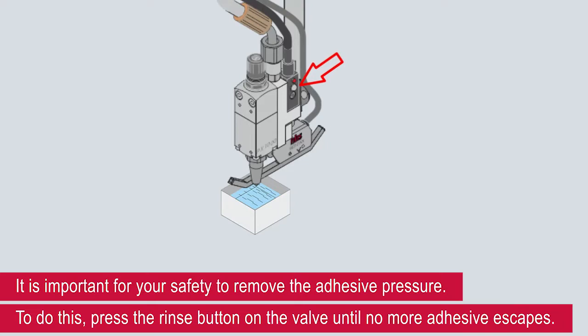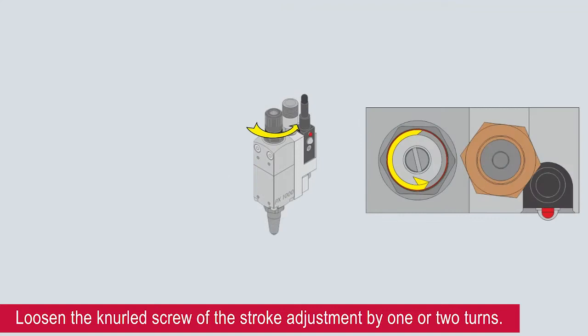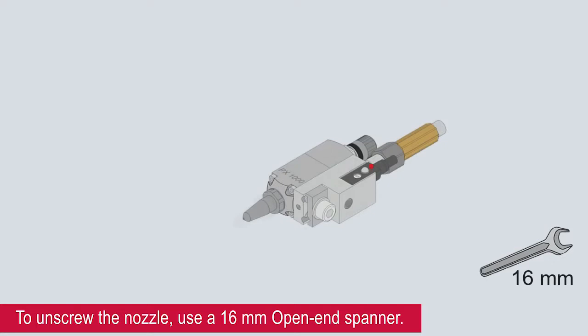Loosen the knurled screw of the stroke adjustment by one or two turns. To unscrew the nozzle, use a 16mm open end spanner. Remove the armature and clean all parts.